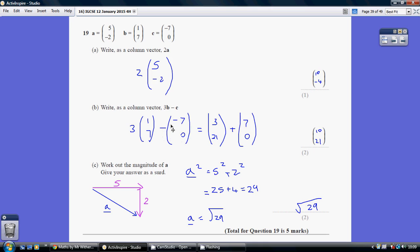Now remember, minusing a minus 7 is actually adding a 7, and then obviously the 0 is a 0. So 3 add 7 is 10, 21 add 0 is 21, so 10, 21.